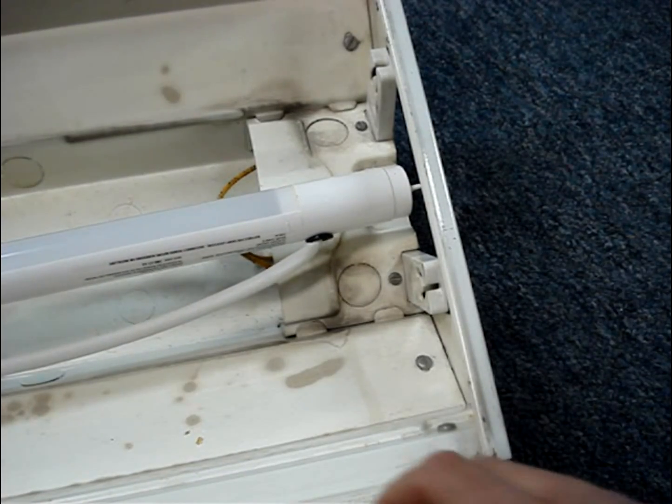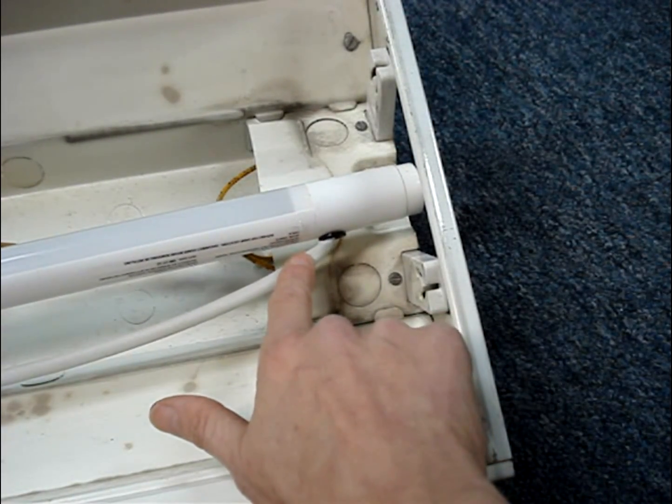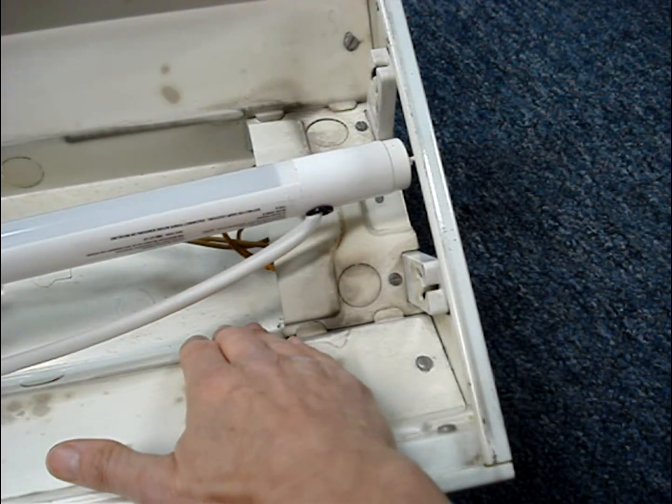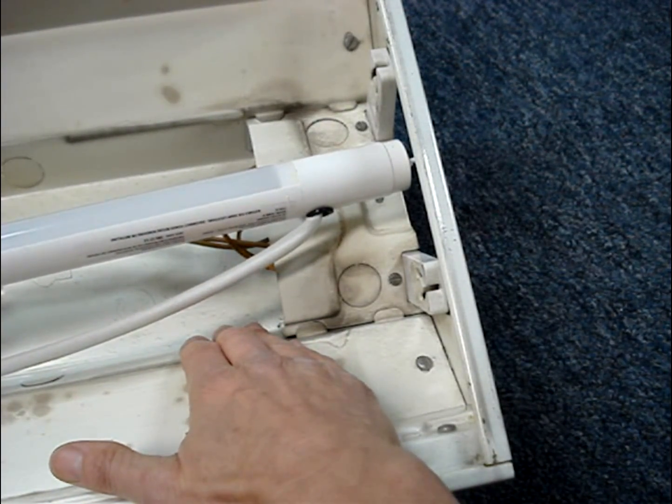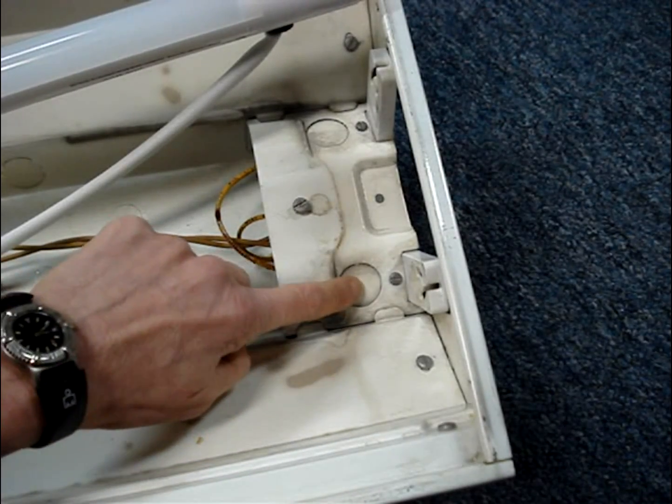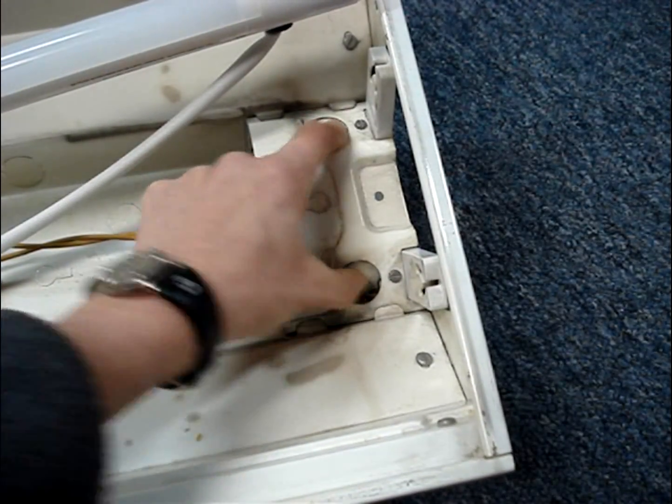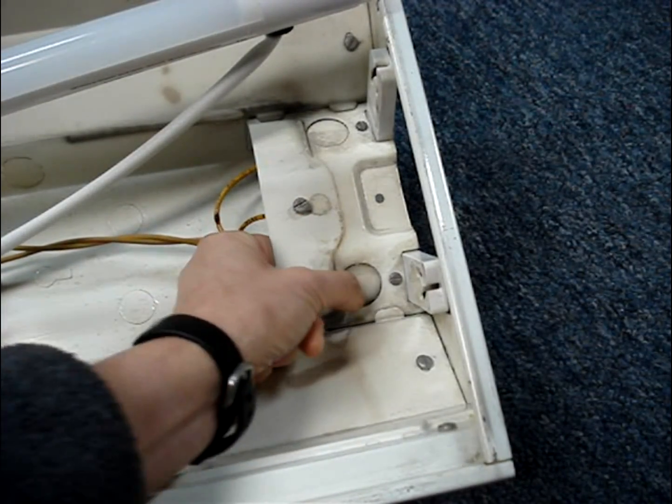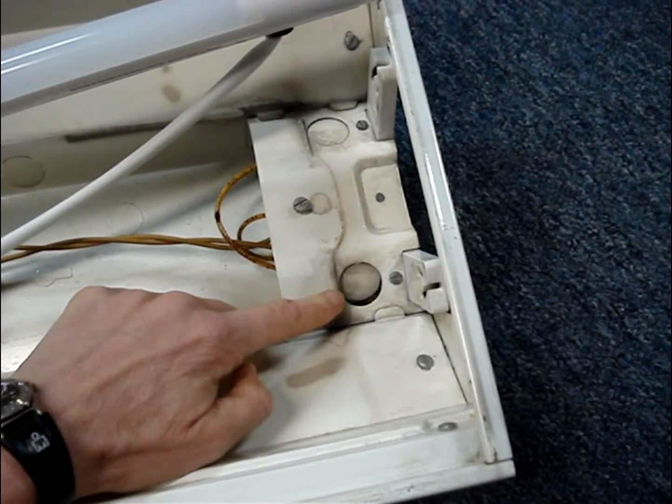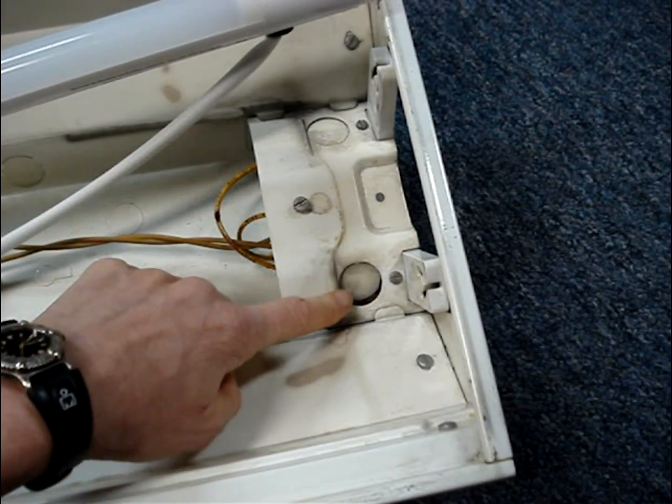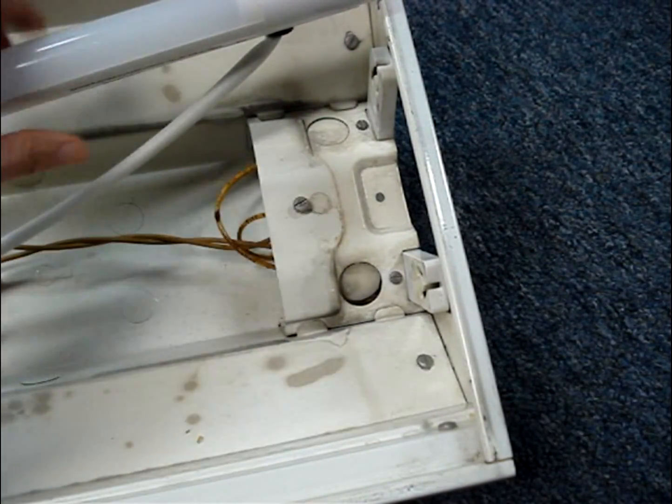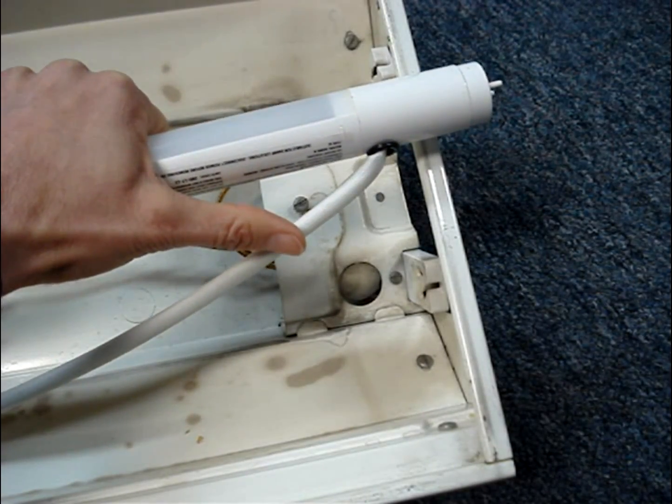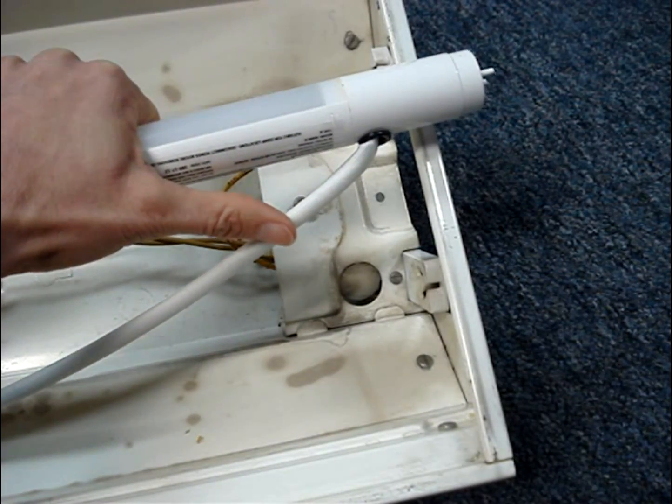Next, plan how you'll get the wire from the end of the LED tube into the compartment that contains the ballast. This fixture has two knockouts that I'll just be able to break away. If yours doesn't have knockouts, you'll have to drill a hole so you can get the wire from the LED tube through to the splice compartment.